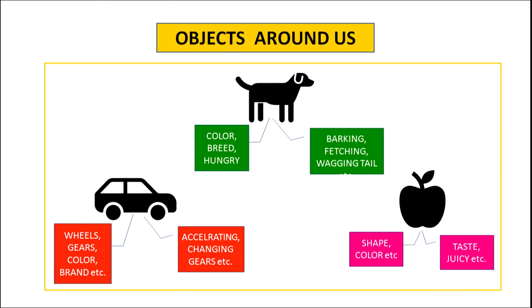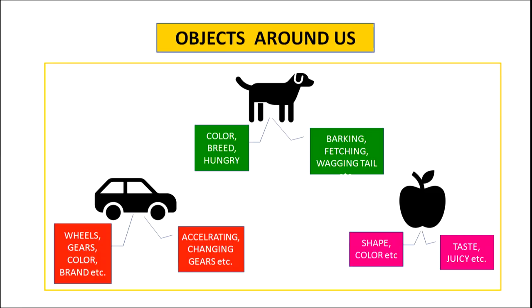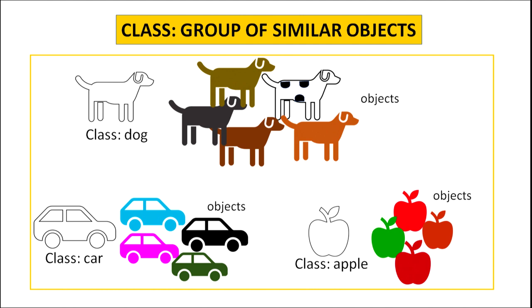Now let us take another example of apple. The various attributes of apple can be shape, colour, etc. and its behaviour can be taste, juicy, etc. Now there may be many objects of same kind. The objects of similar attributes and common behaviour form a class. All these dogs are objects and they belong to the class dog. Similarly, all these cars and apples belong to the classes car and apple respectively.